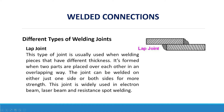The lap joint is usually used when welding pieces that have different thickness. It is formed when two parts are placed over each other in an overlapping way. The joint can be welded on either just one side or both sides for more strength. This joint is widely used in electron beam, laser beam, and resistance spot welding.